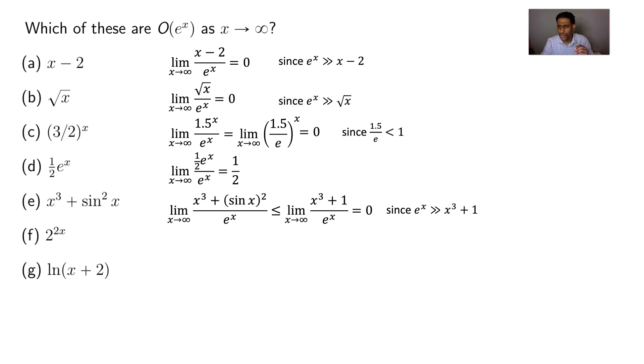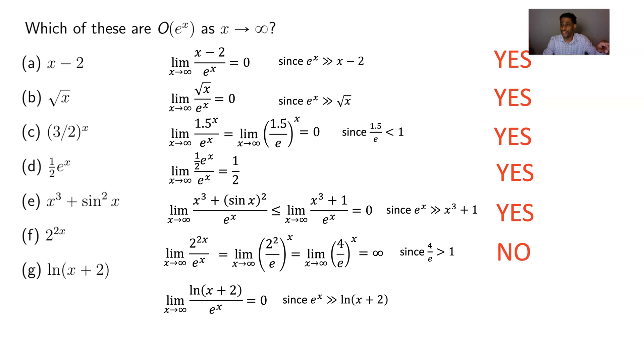Next up, letter f. 2 raised to the 2x divided by e^x. And what you want to do is do the same thing you did for letter c. You want to be able to say, hey, this is all to the x. When you raise to a power and you raise to another power, you multiply the exponents. And so this 2 to the 2x can be thought of as 2 squared to the x. That's a 4. Now, e is 2.71, and there's a 4 that's on top, divided by 2.71. It's bigger than 1. It's going to go to infinity. Finally, the natural log of x plus 2, yeah, it's going to go to 0. Exponential function grows faster than log function. All of these were yes, they are in big O of e^x, except for letter f. It was a no.